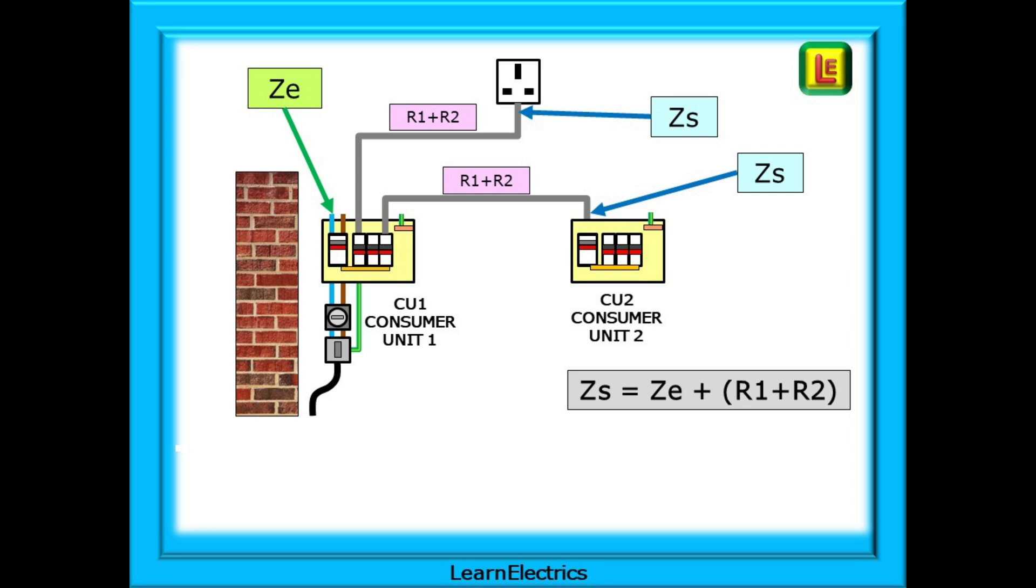At the end of each of the circuit cables we can measure or calculate a ZS. We can measure ZS at the socket for the final circuit and we can measure ZS at the main switch of CU2 for the distribution circuit. This information will be recorded on the schedule of test results in the correct row for each circuit.